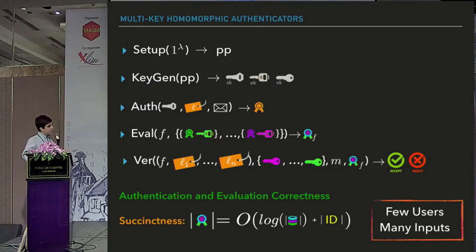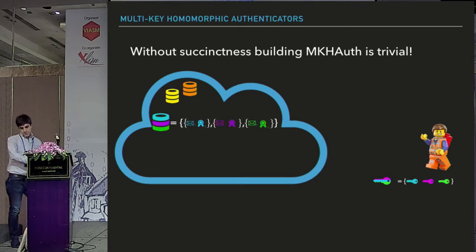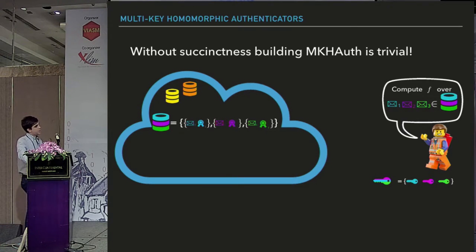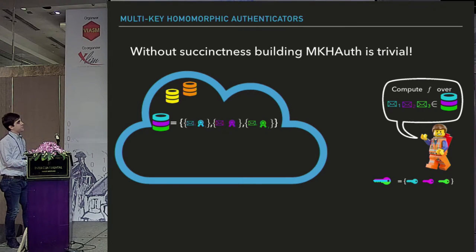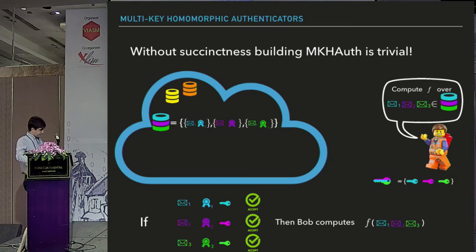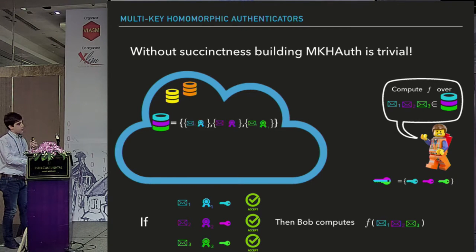It could sound like a weird requirement, but if we consider computations with a few users and many inputs, that succinctness definition is reasonable. Why stress succinctness so much? Because without succinctness, building this kind of homomorphic authenticator becomes trivial. Imagine the cloud has messages and authenticators from different users, and Bob always computes the same function. The cloud can simply parse the messages and their authenticators and send everything to Bob, who separately checks using the different verification keys, then computes the function on his own.